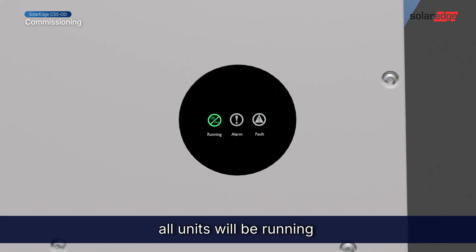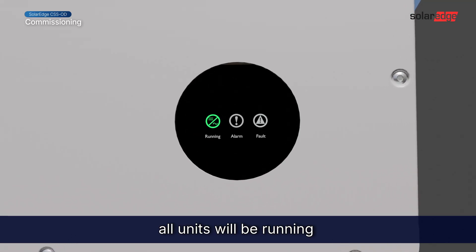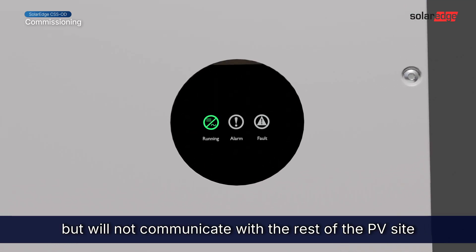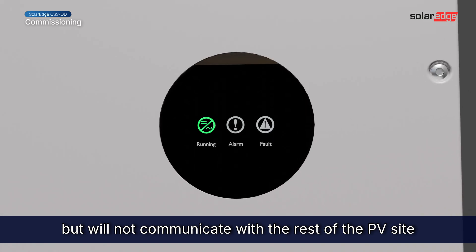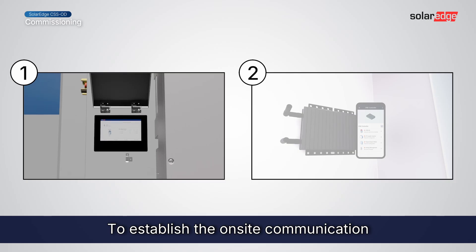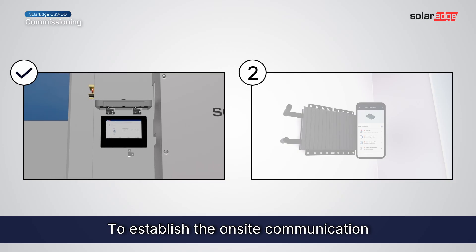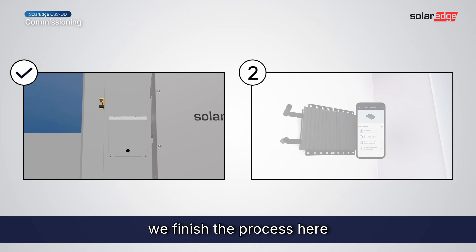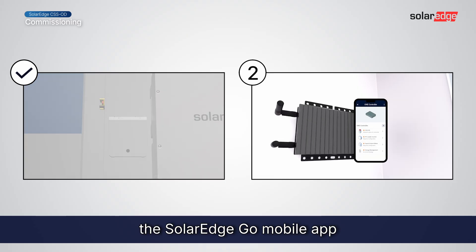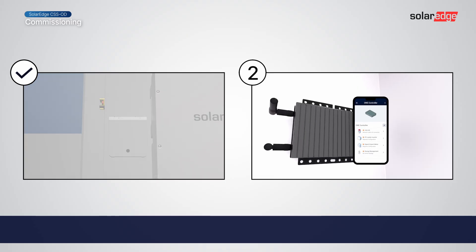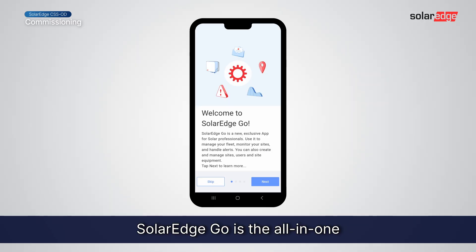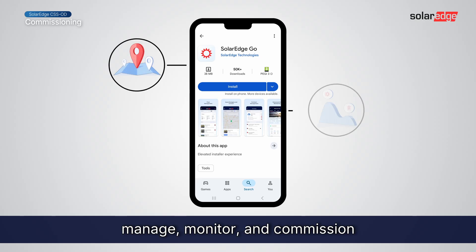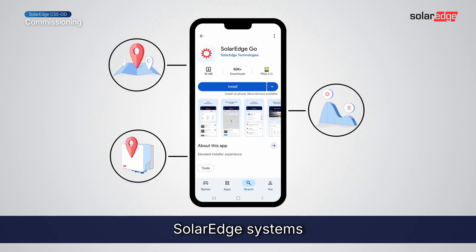Once done, all units will be running but will not communicate with the rest of the PV site. To establish the on-site communication, we finish the process here and continue to the SolarEdge GoMobile app. SolarEdge Go is the all-in-one mobile app for installers to manage, monitor, and commission SolarEdge systems.